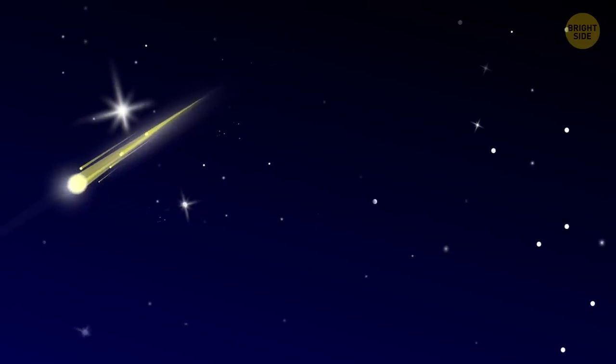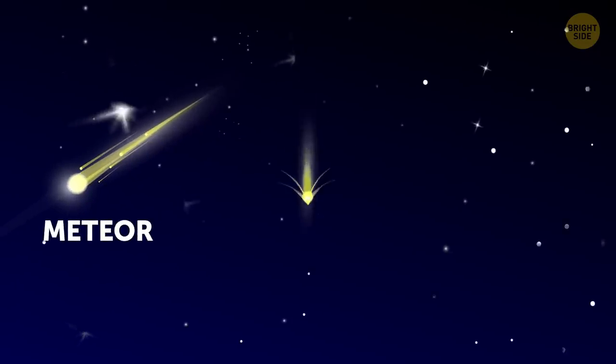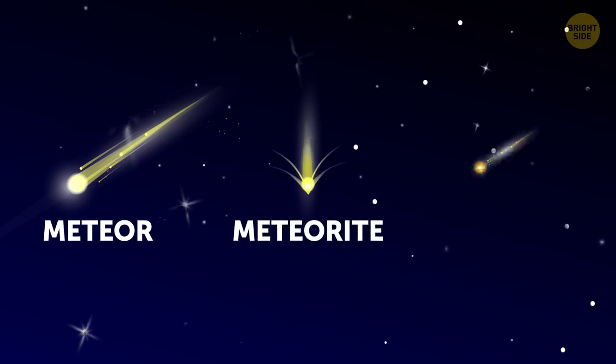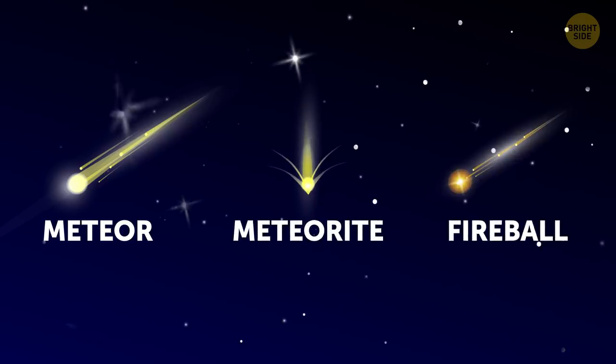In science, shooting stars are called meteors. If parts of meteors do reach the Earth's surface, they are called meteorites. Super bright meteors are called fireballs.